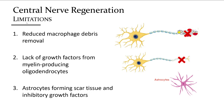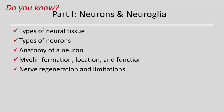Astrocytes promote scar tissue formation by halting any growth progress by the axon. Thus, nerve regrowth can occur to varying degrees depending on the damage, severity, and location in the periphery, but not in the central nervous system. You should be familiar with the types of neural tissue, types of neurons, neuron anatomy, myelin formation, location, and function, and how nerves are regenerated in the periphery and the limitations in the central nervous system.